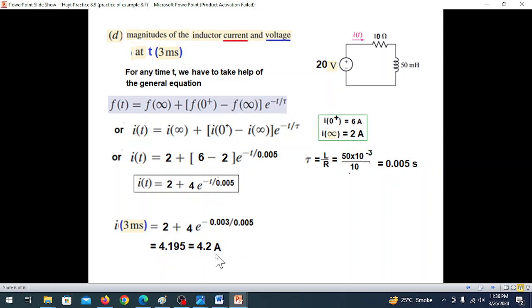To find voltage, use KVL: -20 + i×10 + VL = 0. With i = 4.2, we get 4.2×10 = 42, so VL = -22 volts. The magnitude is 22 volts. Thank you for following along.